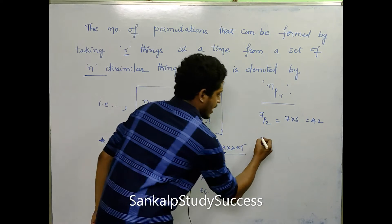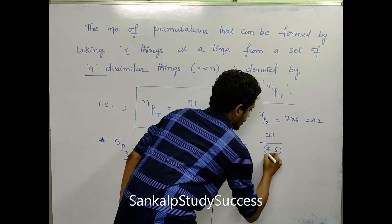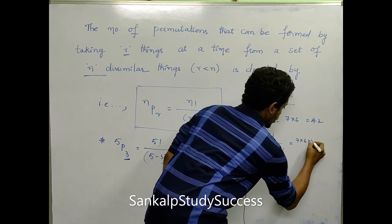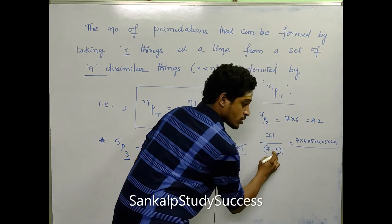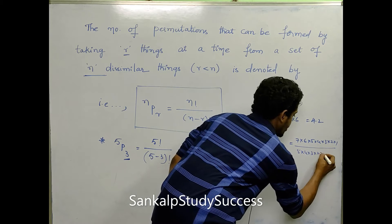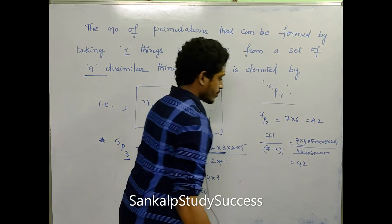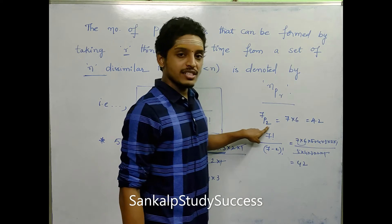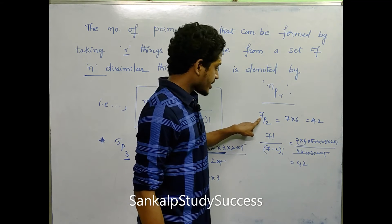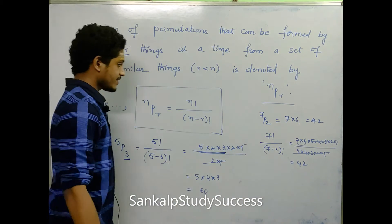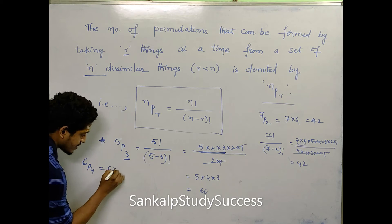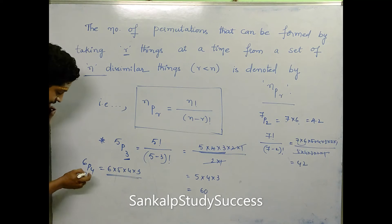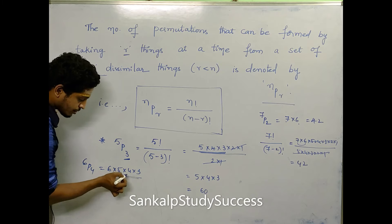Let's verify 7P2 using the formula: 7 factorial divided by 7 minus 2 factorial equals 7 into 6 into 5 into 4 into 3 into 2 into 1 divided by 5 factorial. The 5 factorial cancels, leaving 7 into 6 equals 42. Similarly for 6P4: starting from 6, multiply 4 terms — 6 into 5 into 4 into 3. This is a very important formula.